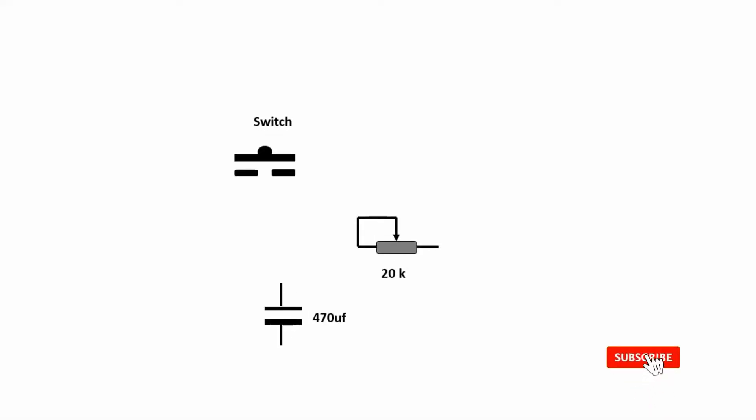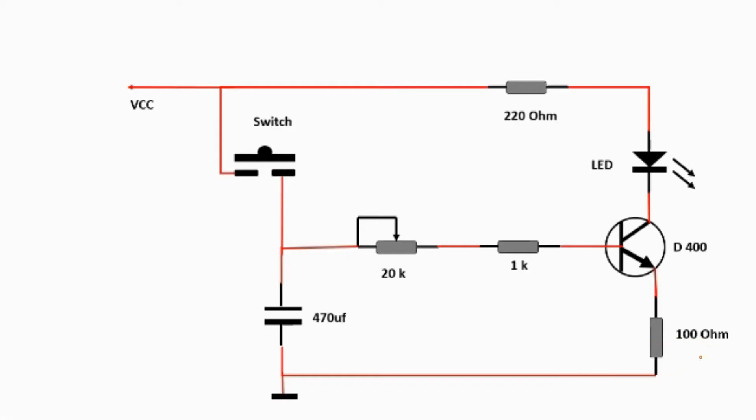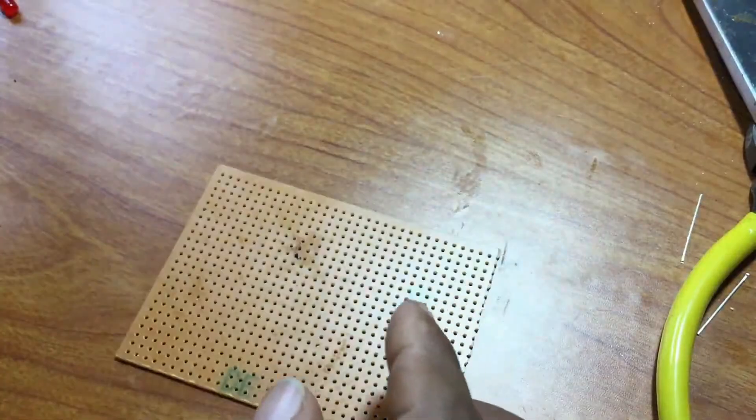This small project needs only a few components: D400 transistor, 470 UF capacitor, resistors, button switch, and an LED bulb. Make the project as shown in the circuit diagram.